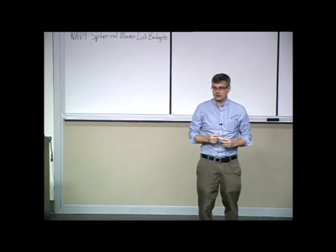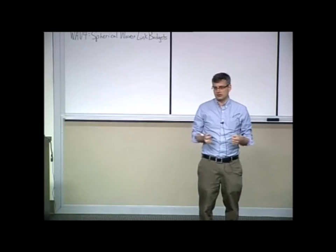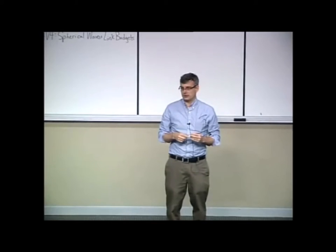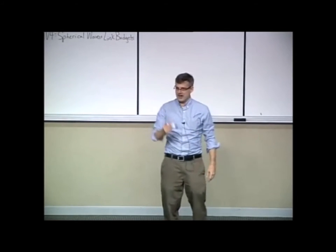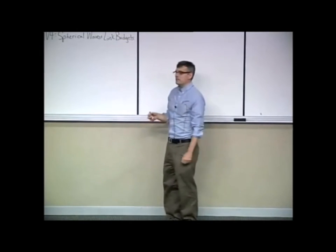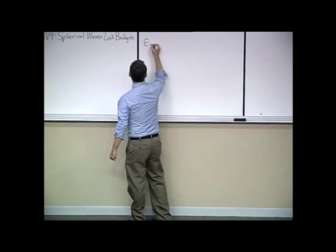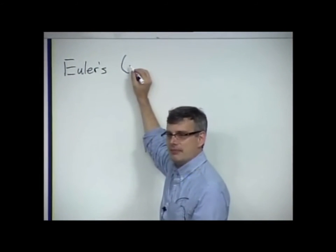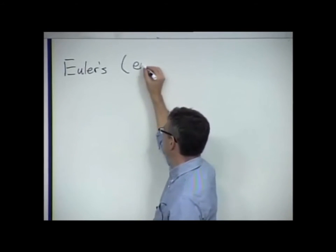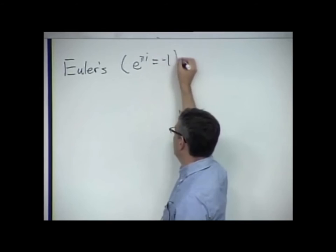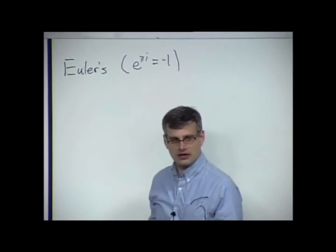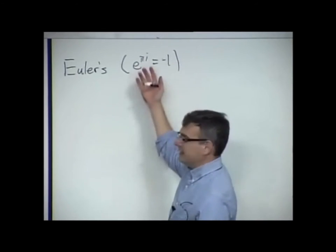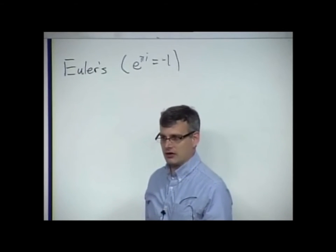Nick, what's your favorite equation? You love them all — that is such a cop-out. Evan, what's yours? Euler's equation, E to the J. Very mathematical. Euler's equation was probably the most mind-blowing equation when I first got to college. Somebody put E to the pi i equals negative one, and I was like, what the heck are you talking about?